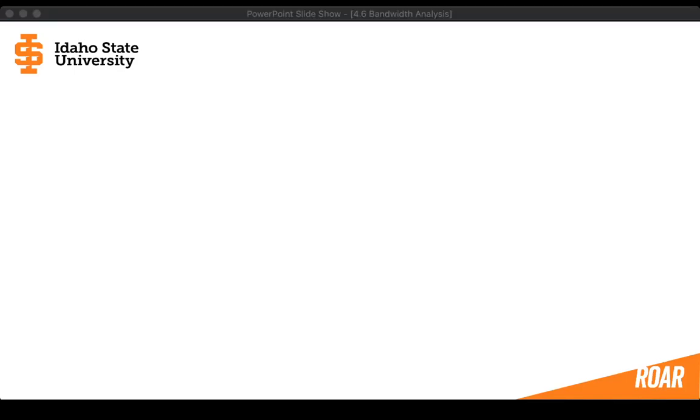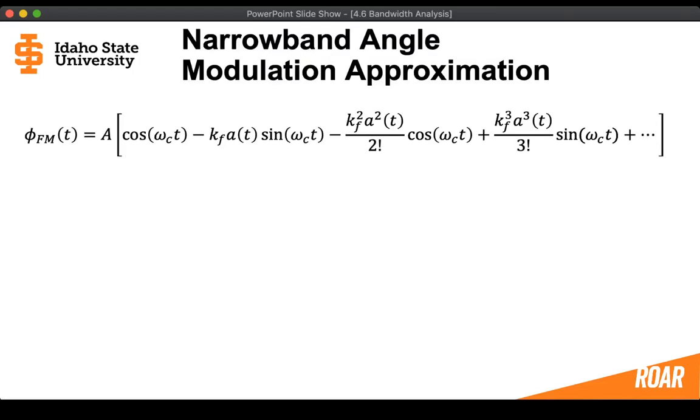Okay, so in the previous video we saw that unfortunately, the frequency modulated signal actually has a theoretical infinite bandwidth, and that's not what we wanted. We wanted a smaller bandwidth. We actually wanted to see if we could make bandwidth equal to zero. So let's see if there's some kind of approximation we could make in order to make the bandwidth of this a lot smaller.